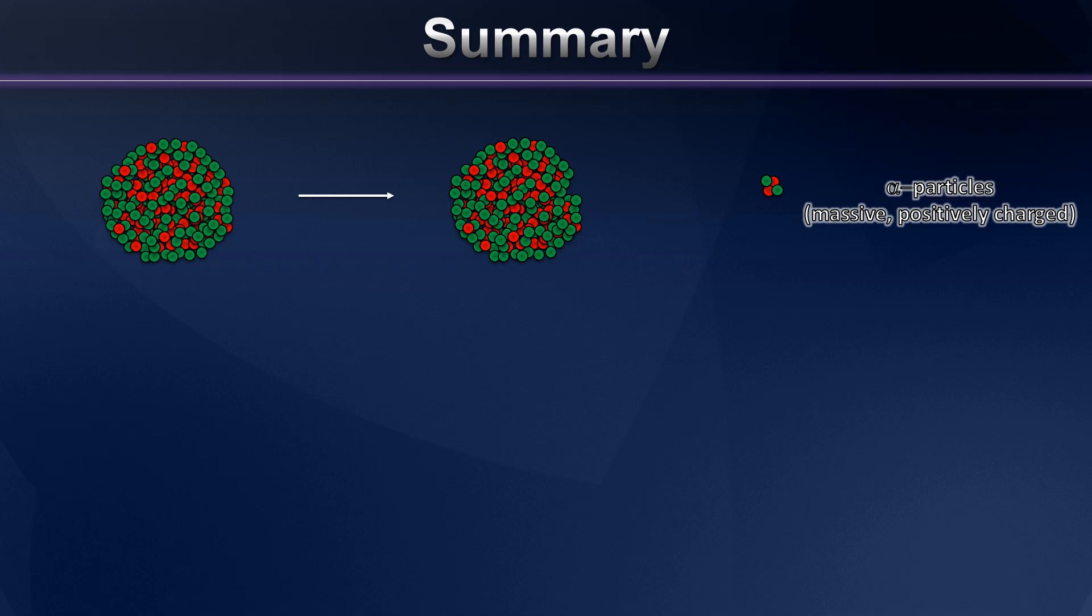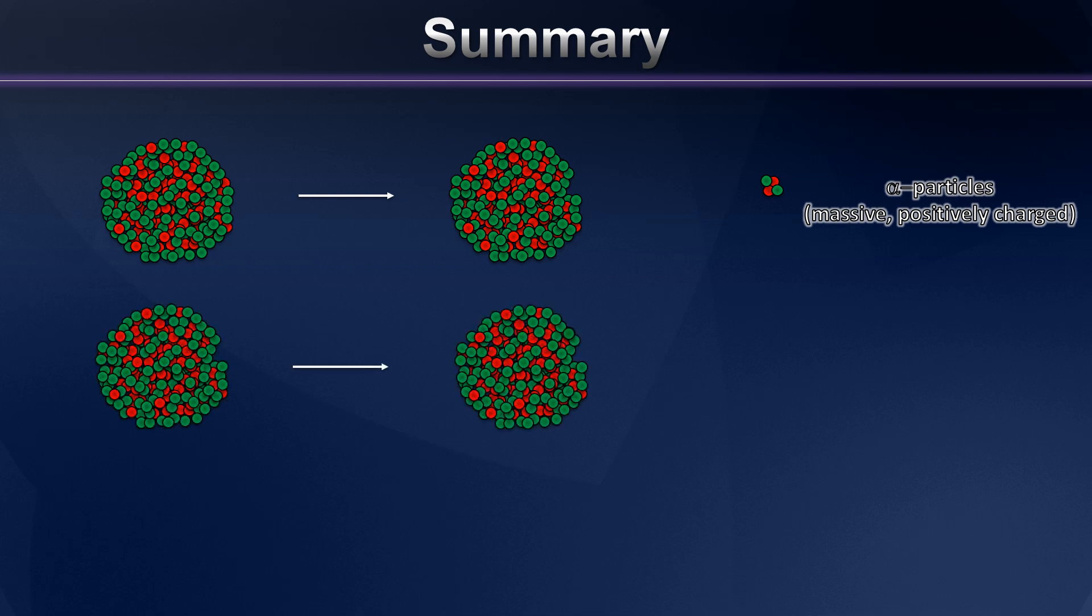Then we discussed beta radiation. And we discussed how sometimes certain nuclei don't have the optimal neutron-to-proton ratio, and try to achieve that by converting a neutron into a proton. And we saw how this can only happen when an electron is ejected from the nucleus, creating a beta particle, a much less massive and negatively charged type of radiation compared to alpha particles.